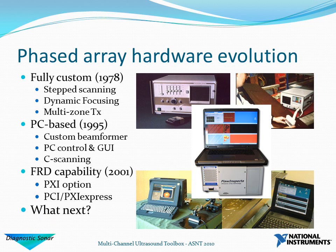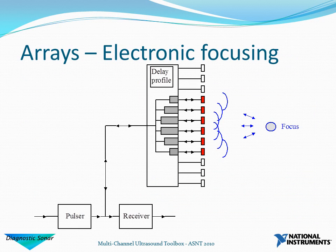So the question is: where do we go next? Let's start off by looking at what we mean and how we're going to be using the arrays, and sort out some of the terminology. Here we have an array — the group of red elements are the ones being used for the active aperture at the moment. We have a pulsar which provides differential delays, which means that the wavefronts move out and arrive at a particular focus, the focus location being determined by the delay profile.